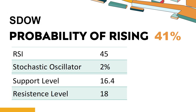Has SDOW experienced bullish or bearish technical momentum recently? Technical Signals and Analysis: SDOW's 14-Day Relative Strength Index (RSI) value was 45. When the RSI is above 25 and below 50, it generally indicates that the stock is moderately bearish. This means that the security's price has been falling but has not yet reached oversold levels, typically considered an RSI reading of 25 or lower.